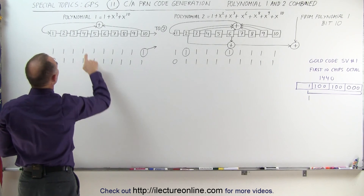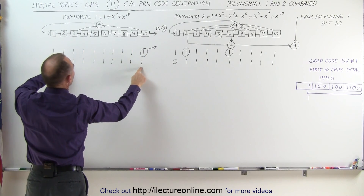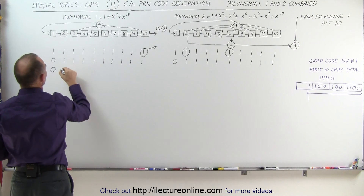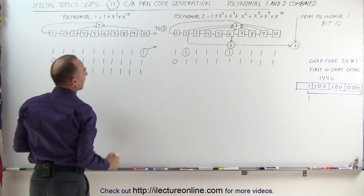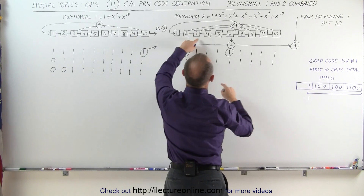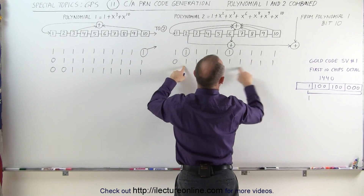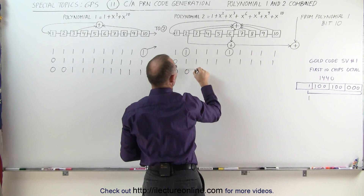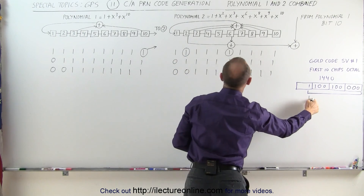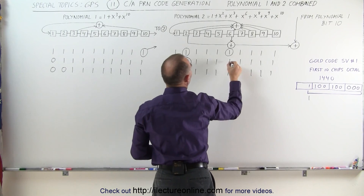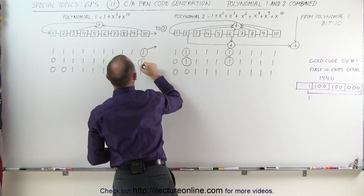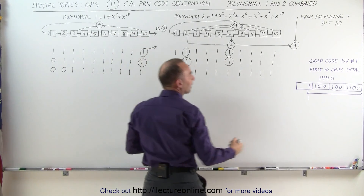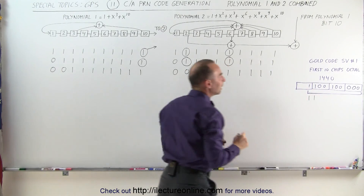Next process: we add 3 and 10 together. They're both 1s, 1 plus 1 is 2, that becomes 0. We feed that into the first bit position, everything else shifts over. Over here we sum up bits 2, 3, 6, 8, 9, and 10 — they're all still 1s, that becomes 6, which is even, so we put a 0 in and everything else shifts over. To get the second chip, we grab bit 2 and bit 6 and sum them with the contents of bit 10 from polynomial 1. That's 3 ones, which adds up to 3 — odd — giving me a 1. So far, we're meeting the code we're looking for.